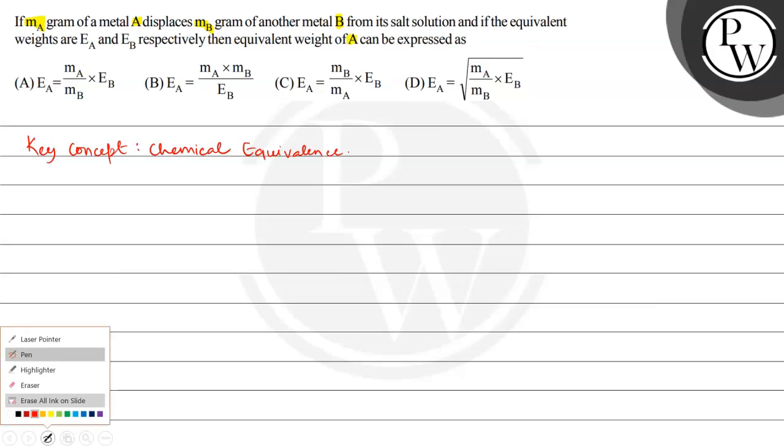Here, metal A reacts with the salt solution of metal B. Let's say the salt solution of metal B is BX, and it gives AX plus metal B.